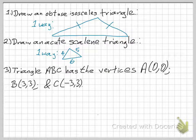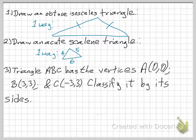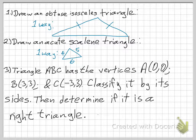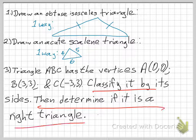Okay, here are problems typical of this section — problems you'll see on the quiz and test. Triangle ABC has vertices A at (0, 0), B at (3, 3), and C at (−3, 3). Classify it by its sides and then determine if it is a right triangle. There are two tasks to do here.